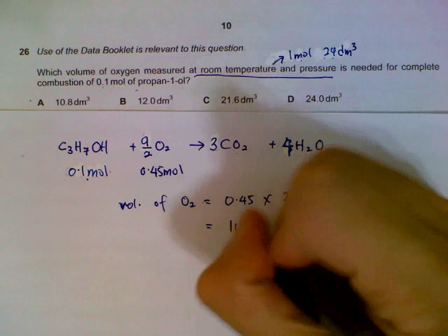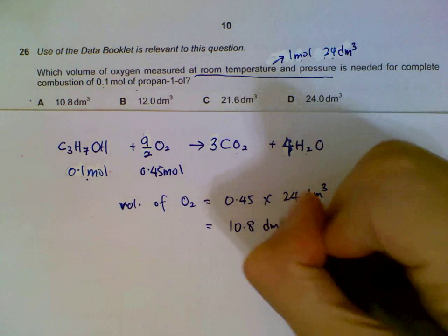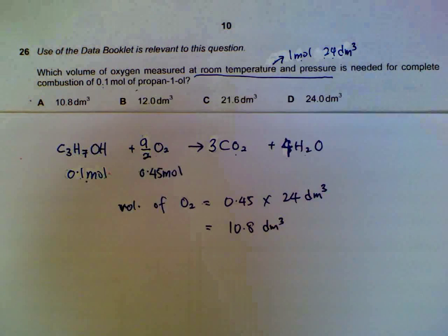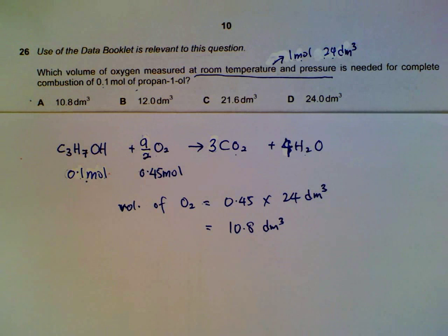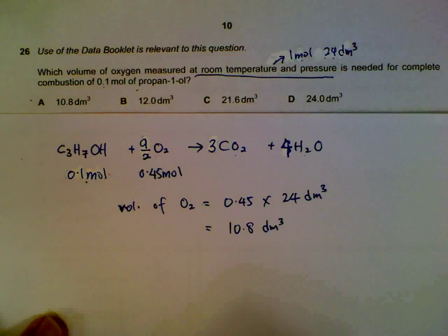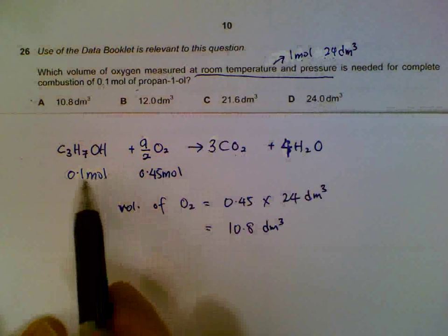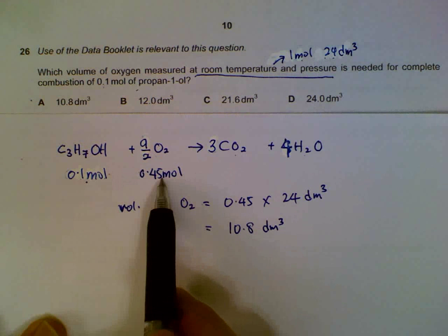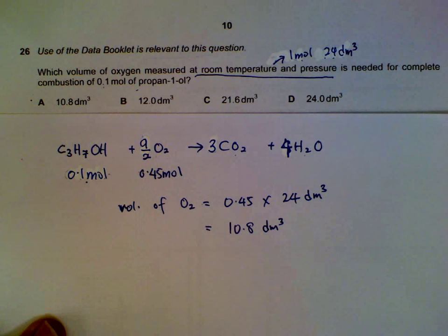That gives us 10.8 cubic decimeters. So the method is: form the equation, find the moles of oxygen, then multiply by 24.